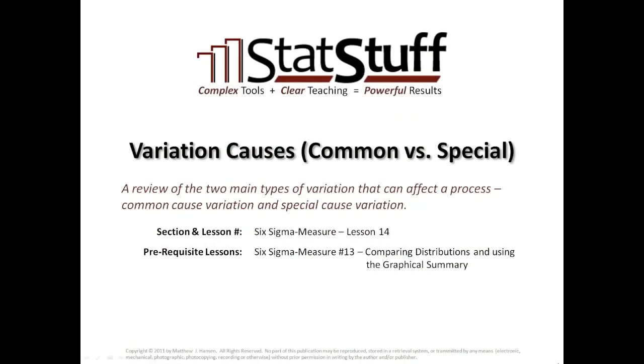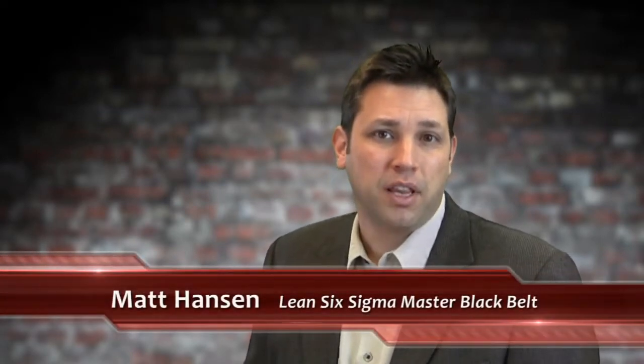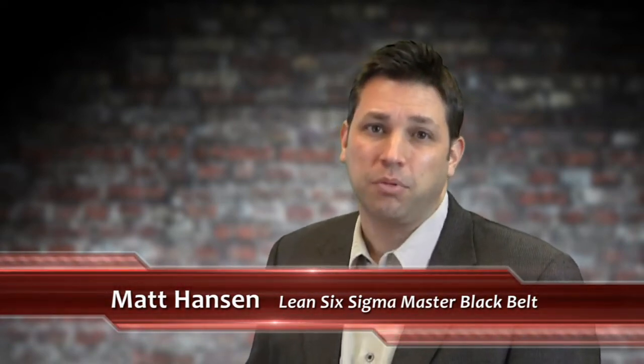Hi, welcome to STAT Stuff. I'm Matt Hanson. In this lesson, we'll review the two basic types of variation: common cause variation and special cause variation. Understanding each of them can make all the difference in how we identify and improve them. It may help to have reviewed all the lessons leading up to the previous lesson on comparing distributions, so please check those out if you haven't already. But for now, let's begin by quickly reviewing the concept of variation or spread.